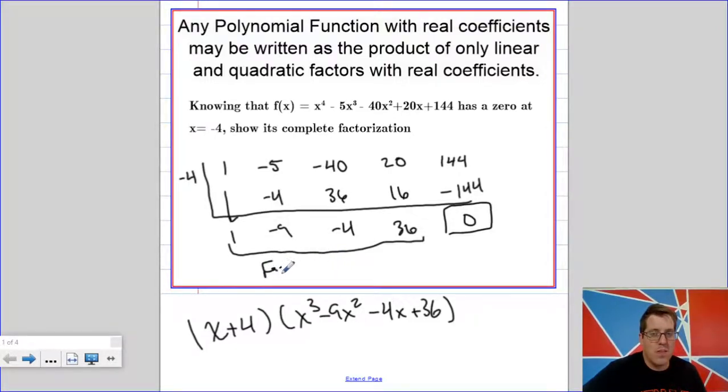I'm going to be able to factor this by grouping. Now before we do that, let's talk about this new theorem. This new theorem says that any polynomial function that has real coefficients may be written as the product of only linear and quadratic factors with real coefficients. So what that means is this will always break down to at least a linear and a quadratic. There is no cubic formula, asterisk, that we will ever use, but there are plenty of techniques to where we can go from here.